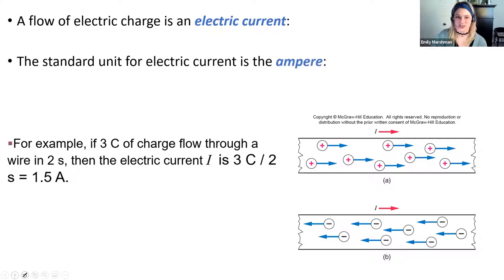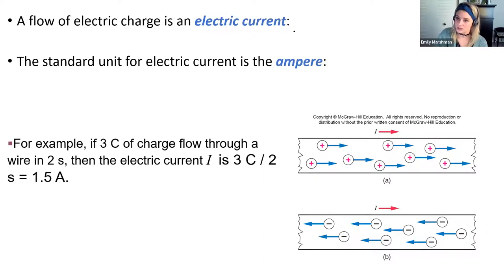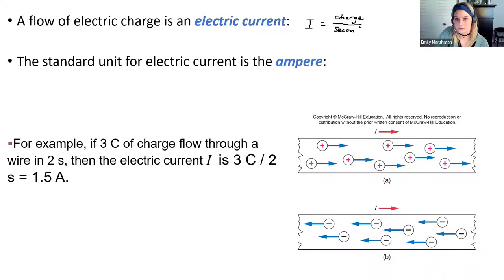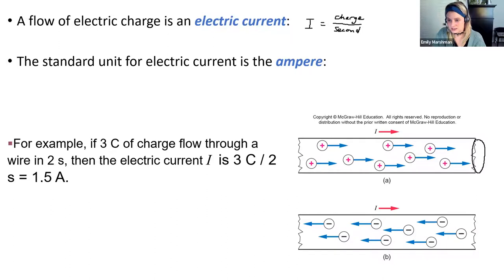Once the charges start to flow, we have electric current. Electric current is the flow of electric charge. Current is denoted by the letter I, and it is the amount of charge that flows every second through a cross section of the wire. If I look at a cross section of the wire and count how many charges have flowed through it after one second, I know the current.